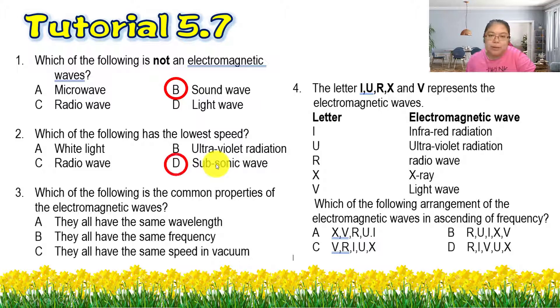Number three, which one following is a common property of the EM? Common properties. Same wavelength? Same frequency? Wavelength and frequency are also different, so that's not common properties. They have the same speed in vacuum. Yes, that's the speed of light, so the answer is C.